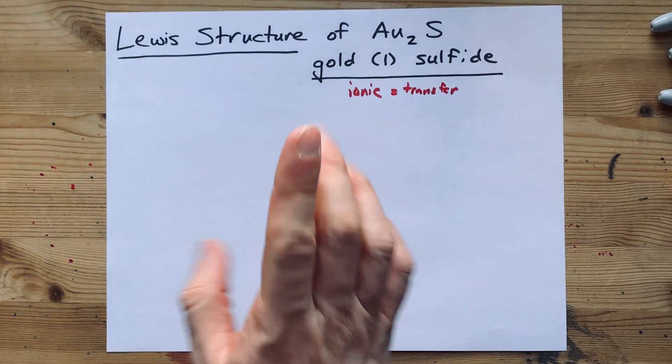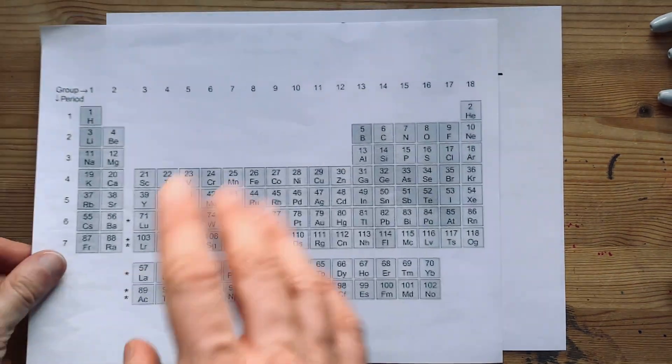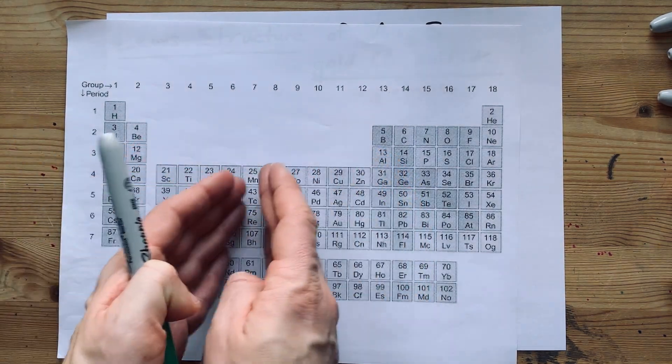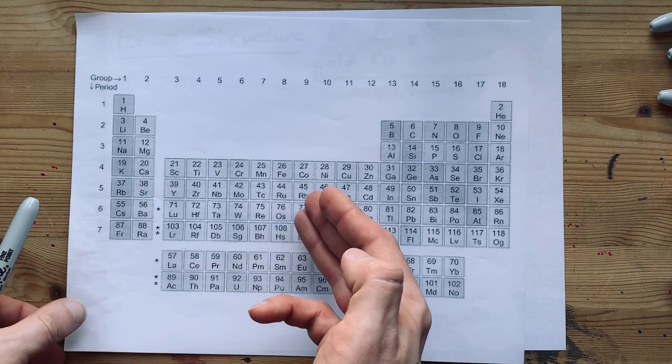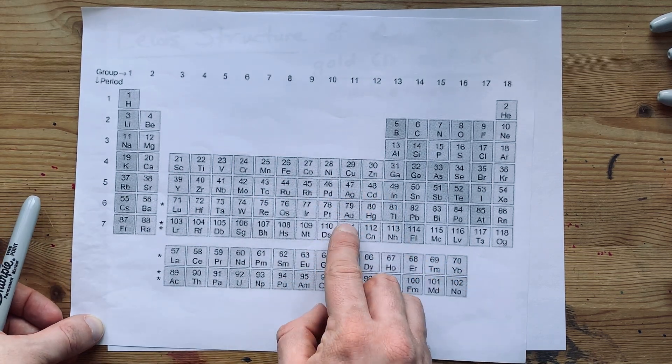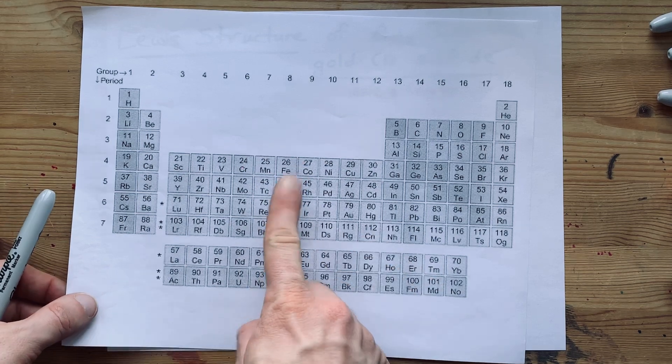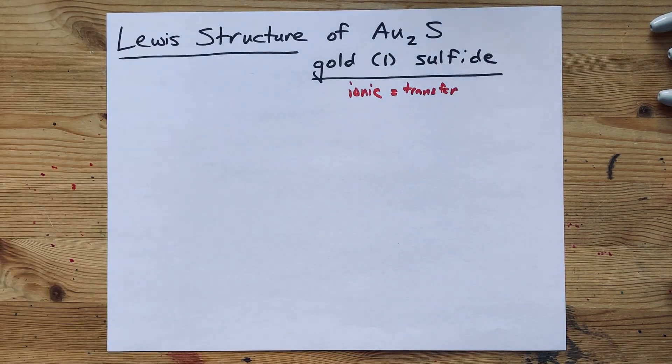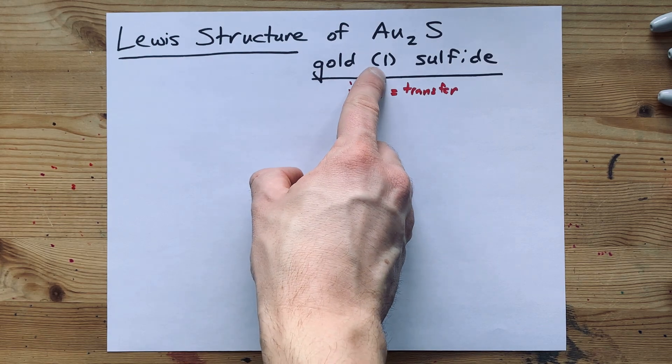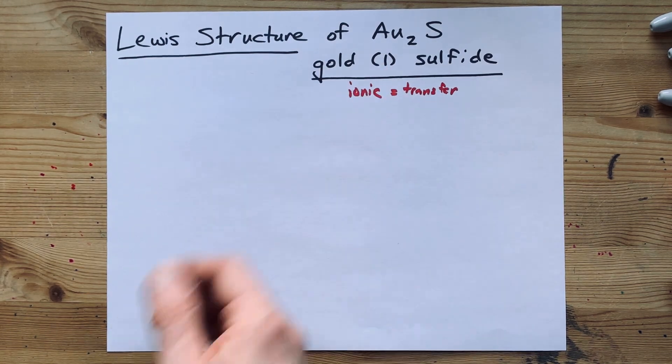Now, what's the charge on gold here? I ask that because the transition metals, anything in this block here, can usually have more than one charge. Gold, in fact, can have a charge of either one or three to be stable. What's the charge on gold here? Well, in the name, it says one, so that makes that obvious.